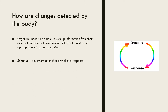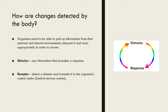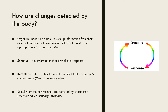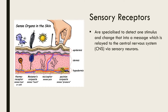A stimulus is any information detected by the organism that elicits a response. These stimuli are detected by receptors which transmit this information to the organism's control centre, the central nervous system. Stimuli from the external environment are detected by specialised receptors called sensory receptors. These sensory receptors are found throughout our bodies, and sensory receptors that share a common location often share a common function. Sensory receptors are specialised cells that have the ability to detect one stimulus and in some way change that into a message that is relayed to the central nervous system.